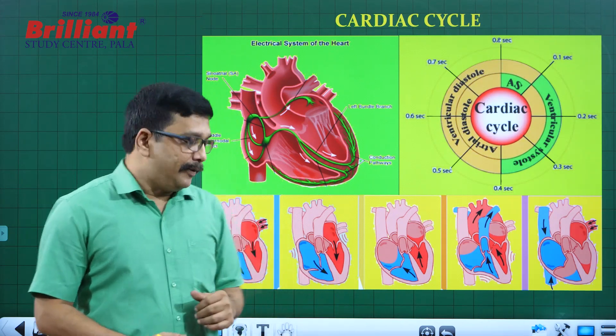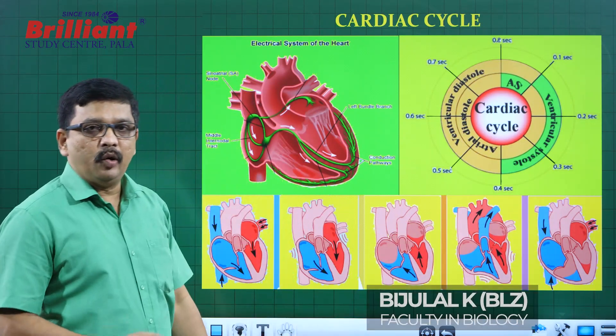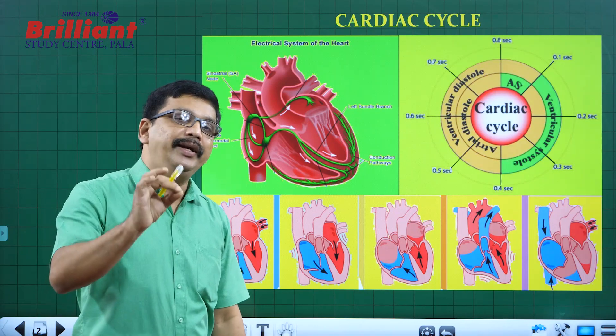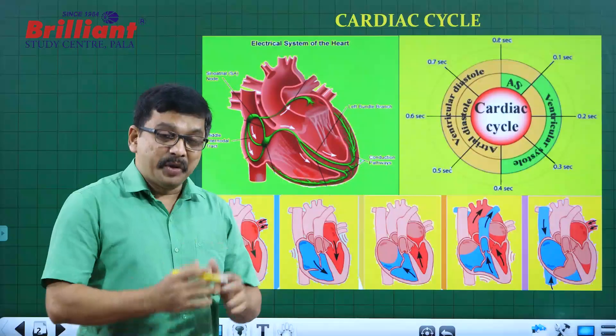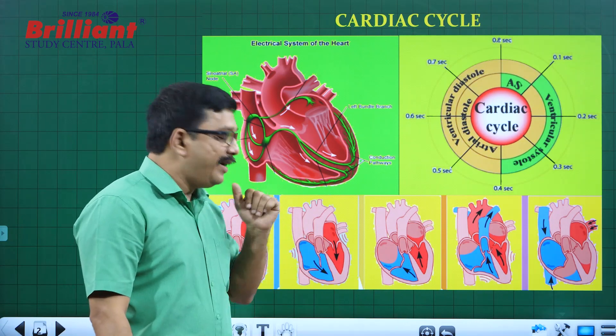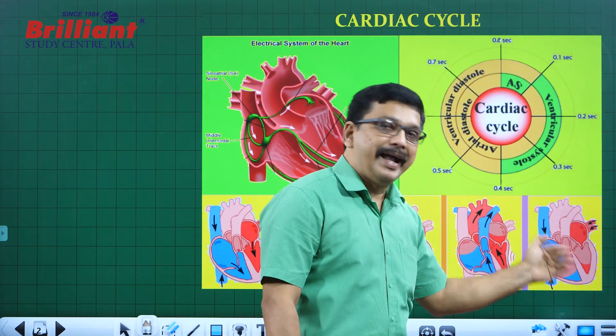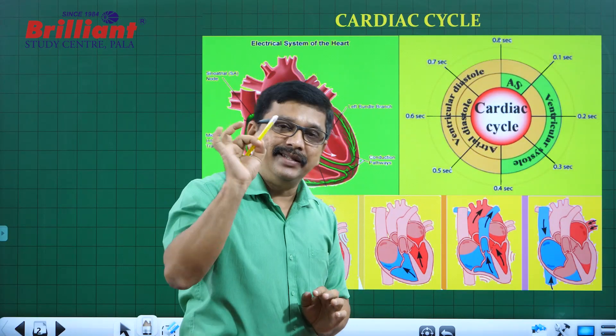The cardiac cycle is actually very simple. It is a very easy topic. What is the cardiac cycle? Cardiac cycle means a cyclical series of events that occur inside our heart during each heartbeat. It consists of different phases like joint diastole, atrial systole, ventricular systole, and ventricular diastole. This total duration is 0.8 seconds.